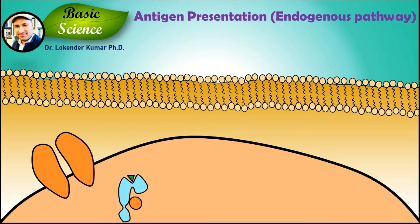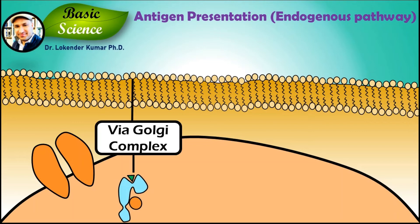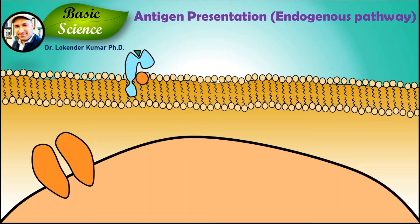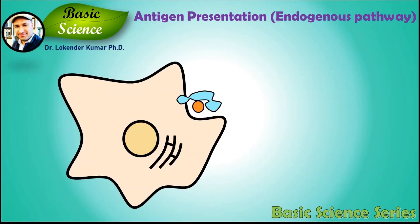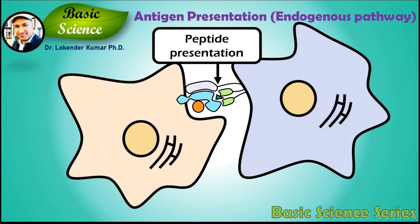The MHC class I peptide complex is now structurally stable and exits the rough endoplasmic reticulum. It proceeds to the cell surface via the Golgi complex. Now the complex is ready to interact with cytotoxic T cells.